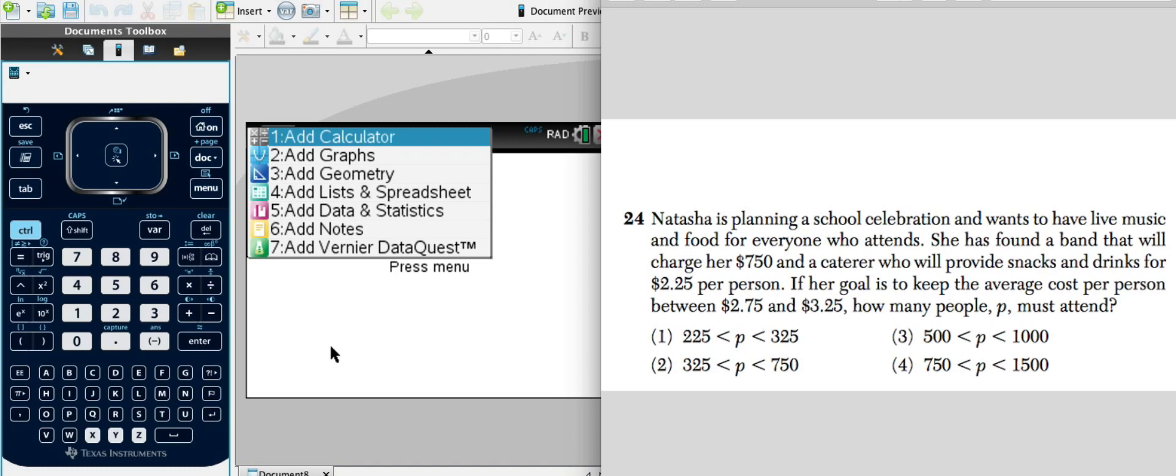Now, the hard part about this is getting the expression right. And I want to focus on this right here, average cost per person. When I see cost per person, when I see that word per, like miles per gallon, I think of a division problem.